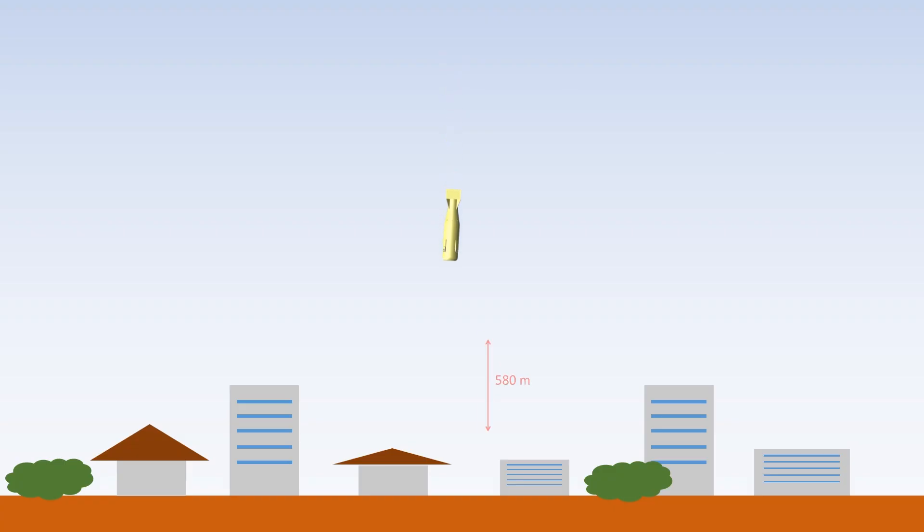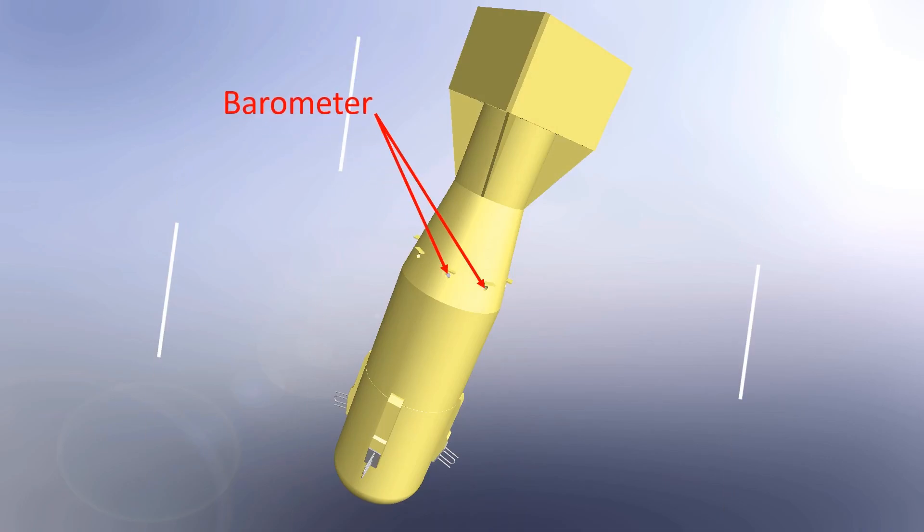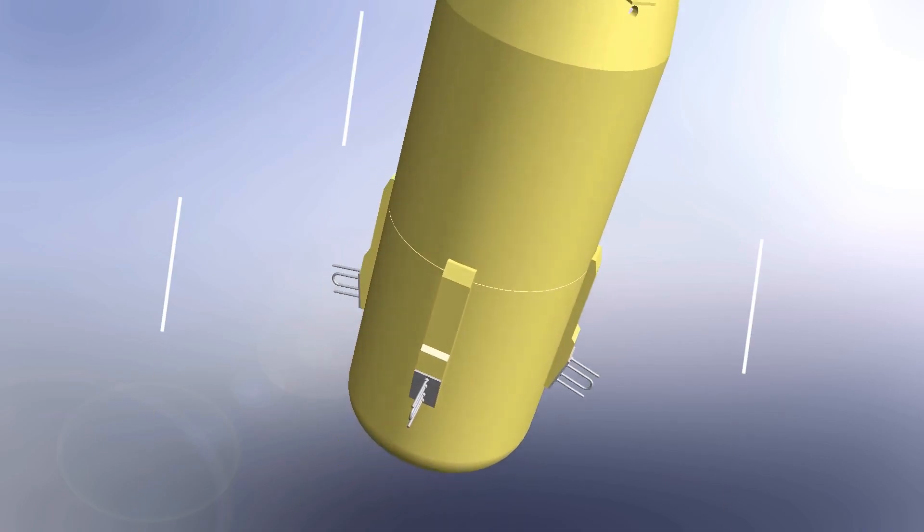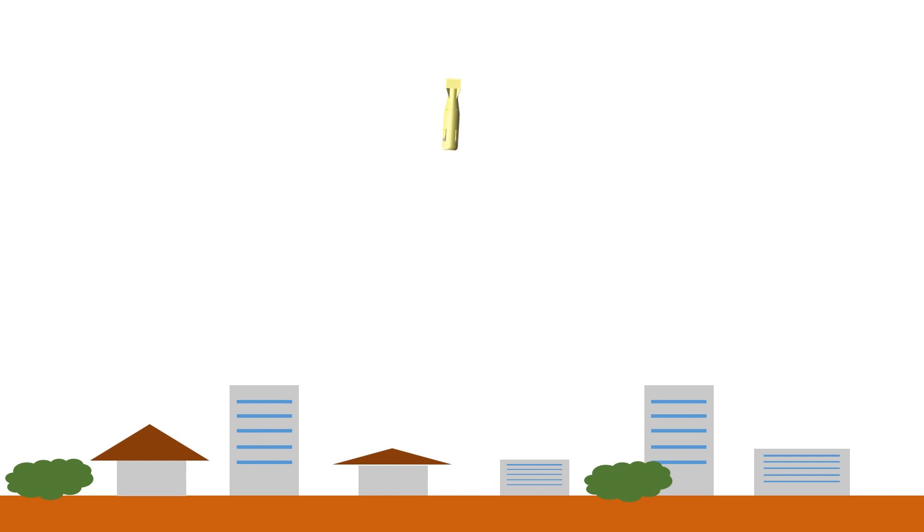The bomb was designed to explode approximately 580 meters above the ground. The barometer is used to determine the ambient pressure and altitude. This altimeter radar also used to calculate the distance from the ground. When the altimeter radar detects the correct height, the firing mechanism is activated.